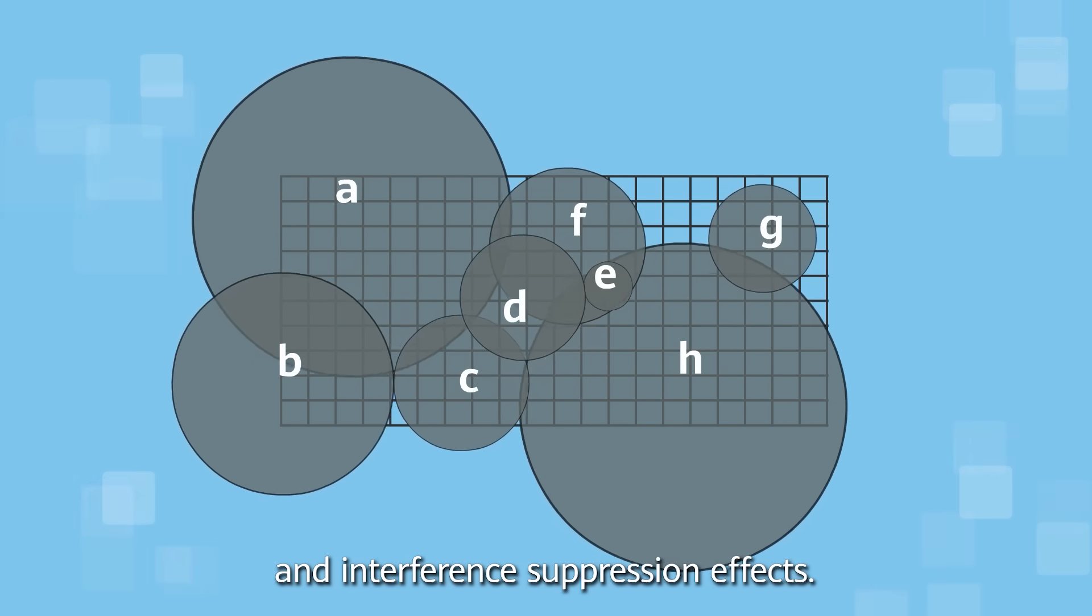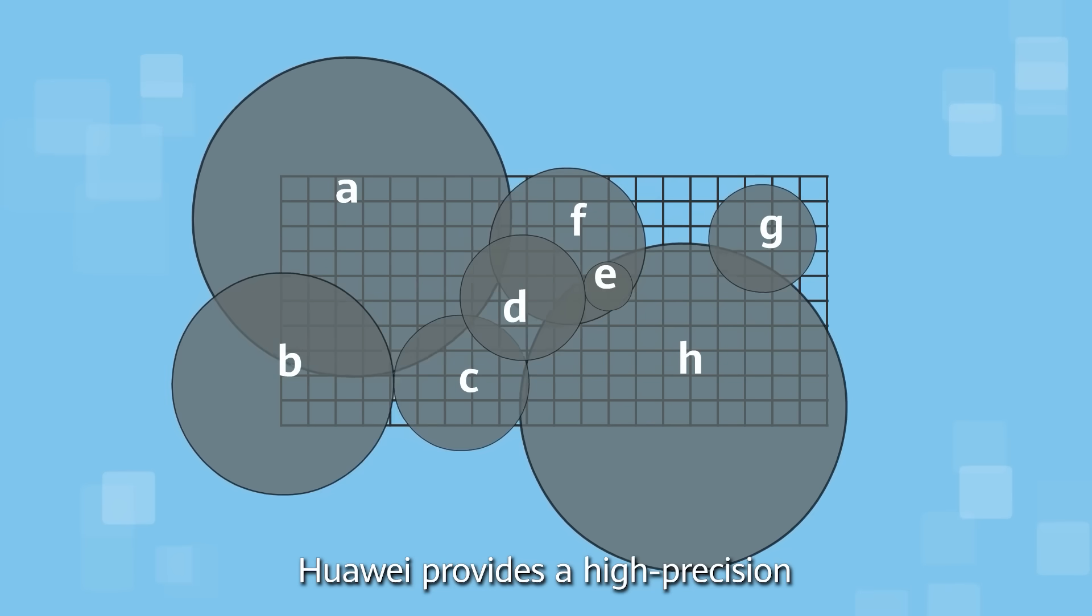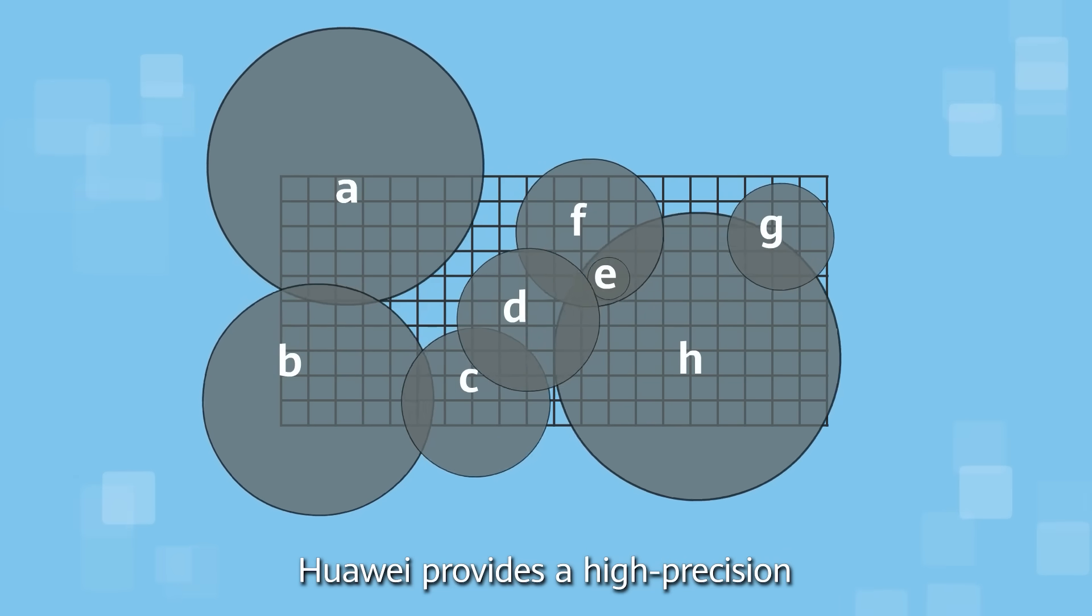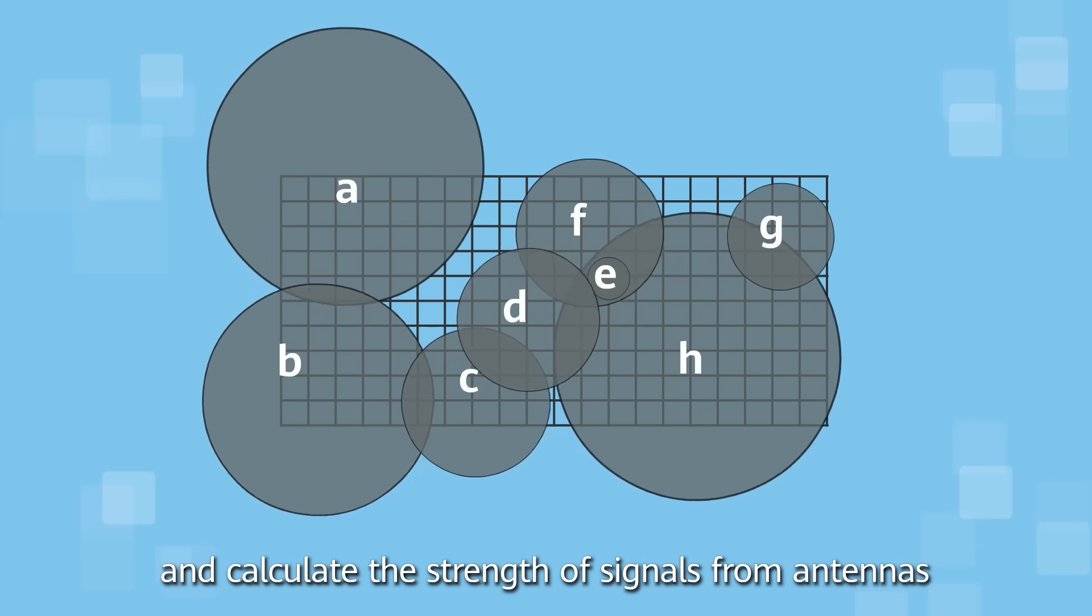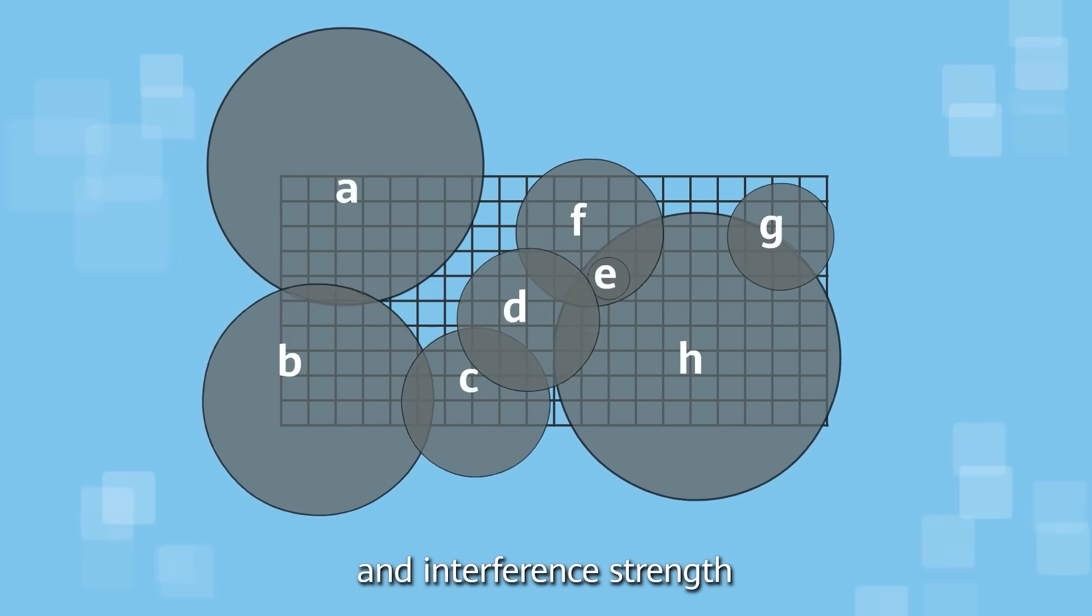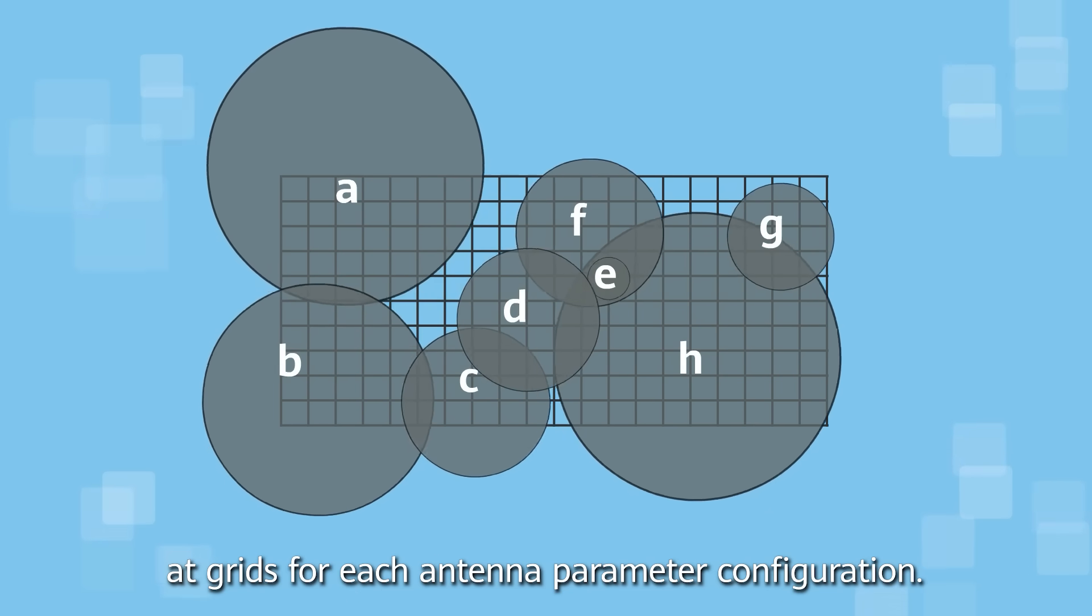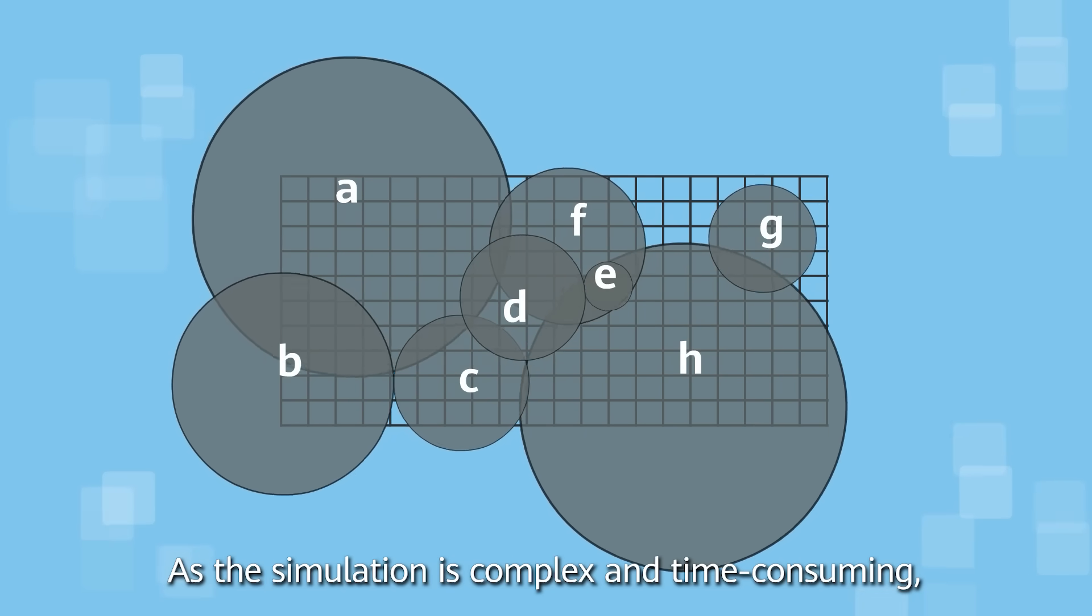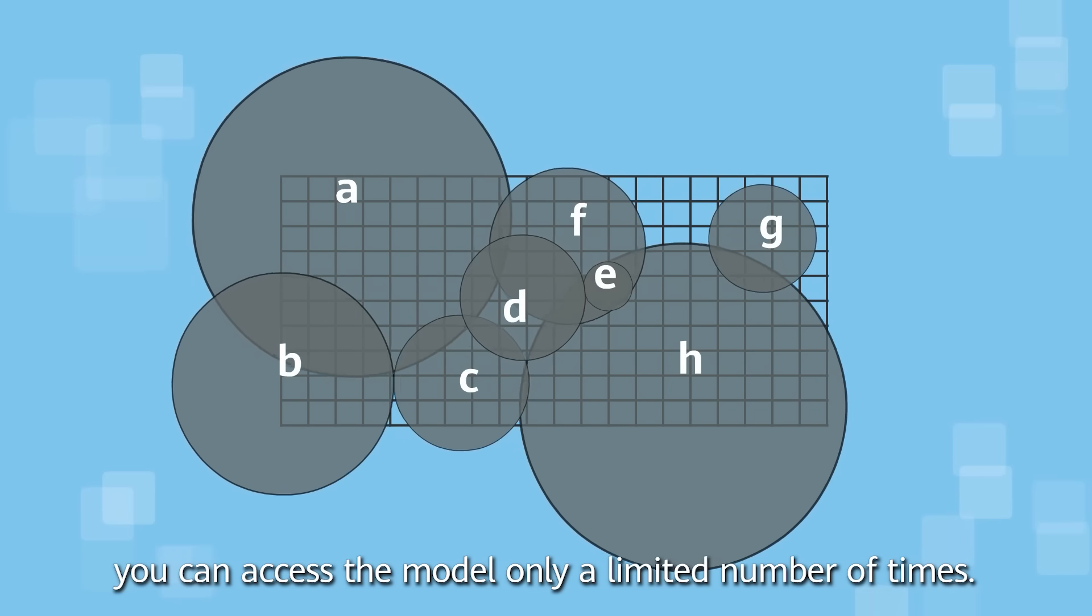To assist you in your task, Huawei provides a high-precision coverage simulation model. The model can simulate and calculate the strength of signals from antennas and interference strengths at the grid for each antenna parameter configuration. As the simulation is complex and time-consuming, you can access the model only a limited number of times.